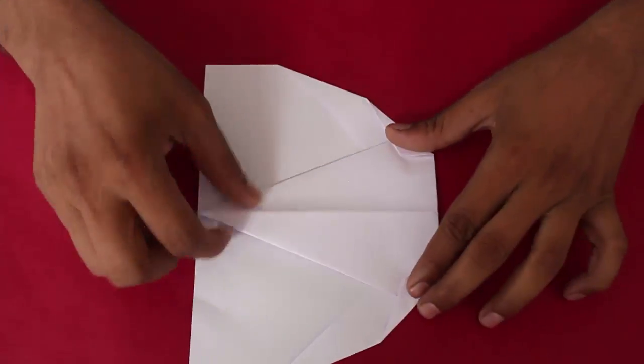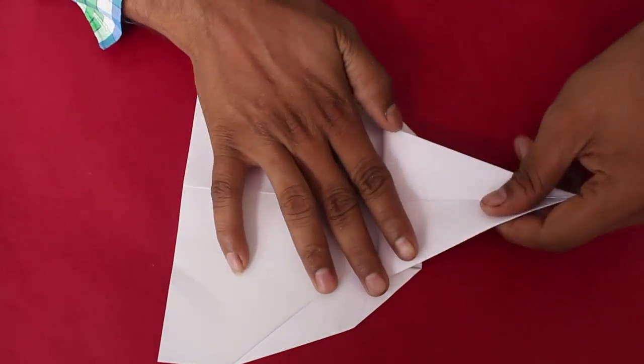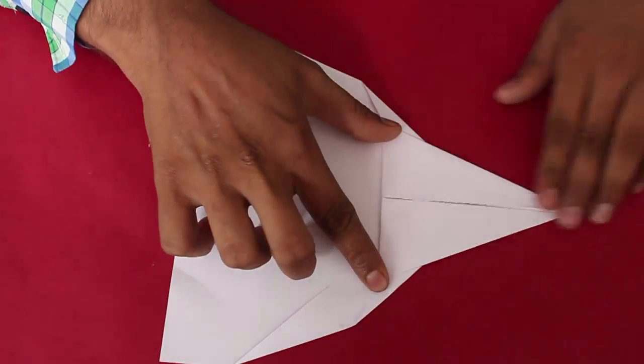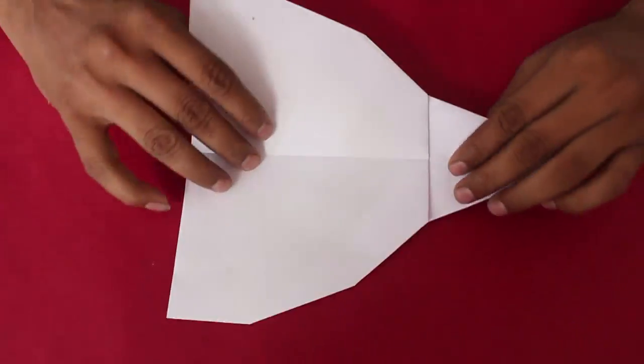Fold two small triangles as shown. Now open the model and fold the nose tip back as shown.